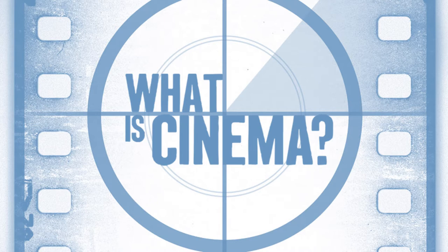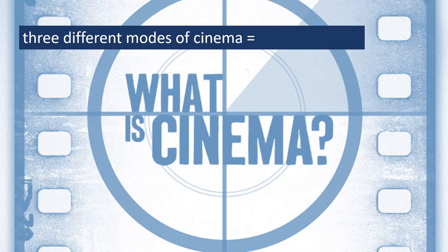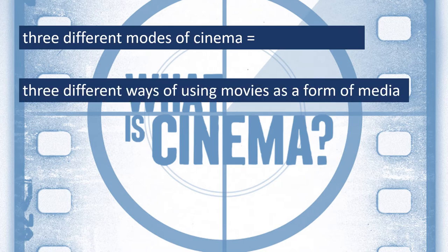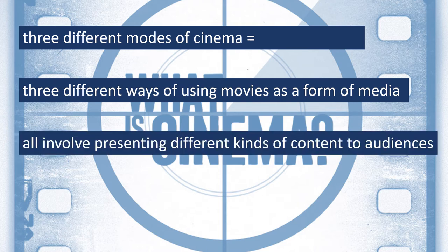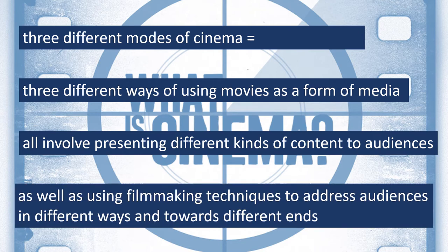In the same way that there are different modes of production that provide different ways of making movies, there are also three different modes of cinema — three different ways of using movies as a form of media that all involve presenting different kinds of content to audiences, as well as using filmmaking techniques to address audiences in different ways and towards different ends.